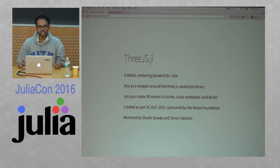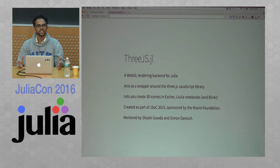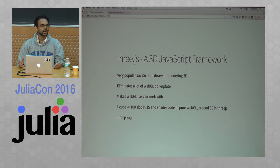I made this package called Three.js.jl last year as part of Julia Summer of Code 2015, which was sponsored by the Moore Foundation. I was mentored by Simon and Shashi. What Three.js.jl actually is, is a WebGL backend for Julia — a wrapper around the Three.js JavaScript library, which is a popular 3D JavaScript framework for rendering 3D on the web.